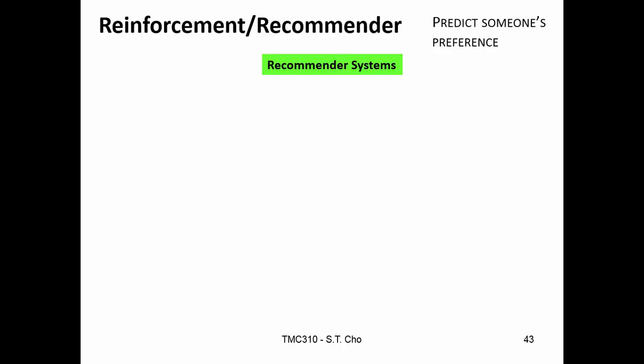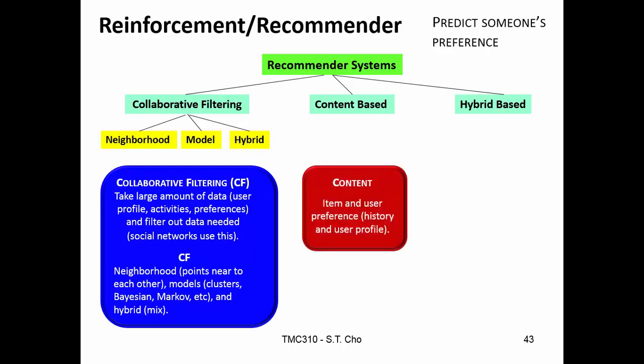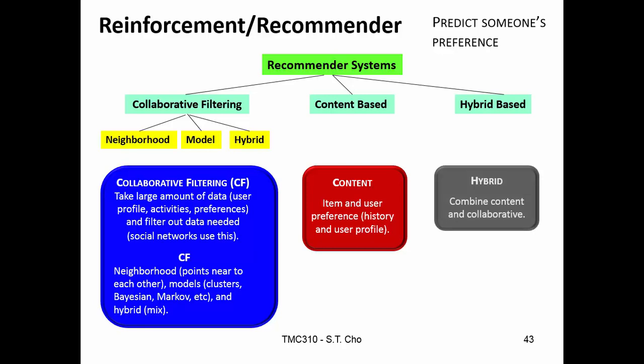And then the third kind of data systems are reinforcement or recommenders. And that's that you can predict what somebody else's preferences are. And so they're based on filtering content, and that's where you're using the history of preferences. And hybrid is you combine the two techniques.